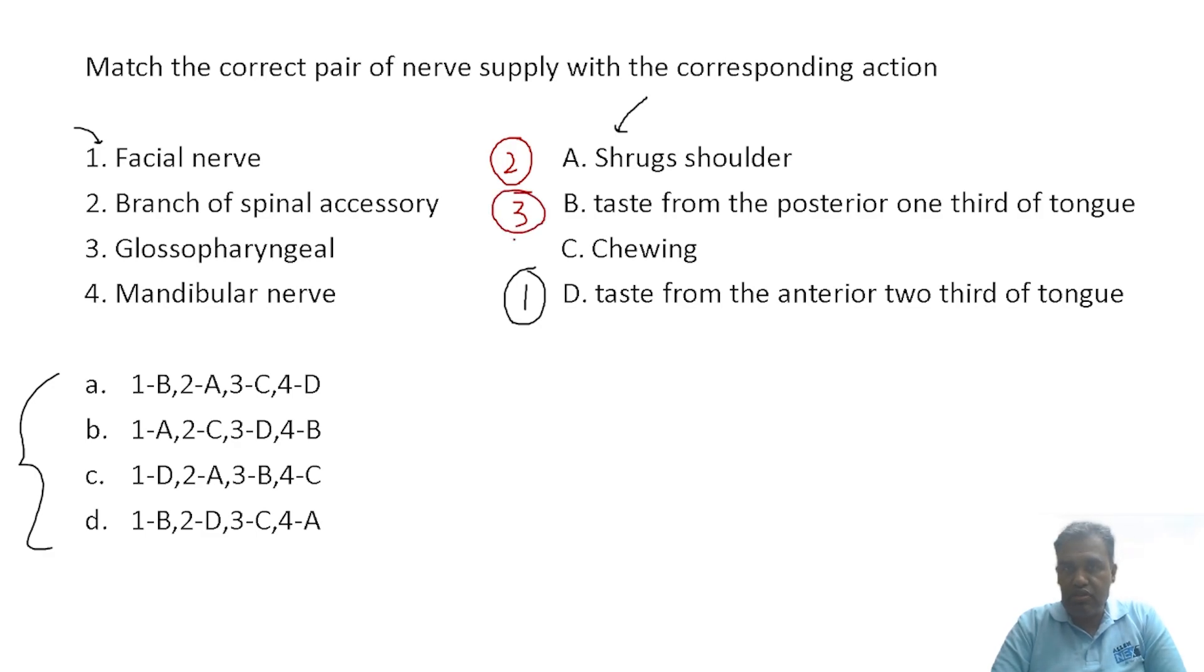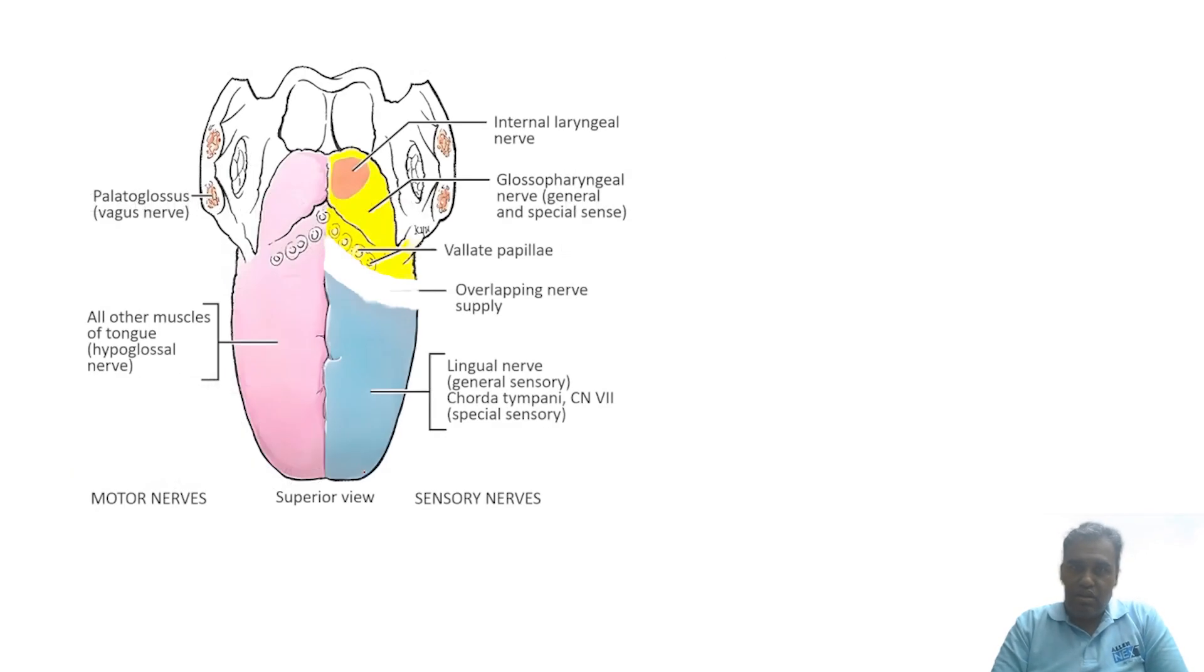No points in guessing. Obviously, option 4 should fit over here. It's mandibular nerve. We all know mandibular chewing. So 1 goes with D, only one option is over here. Everything falls into place: 2 is A, 3 is B, 4 is C. Again, I'm telling you, head neck basic cranial nerves. We also shared the different topics a couple of days back about the list of most important topics. I hope you have seen it - these topics were placed over there.